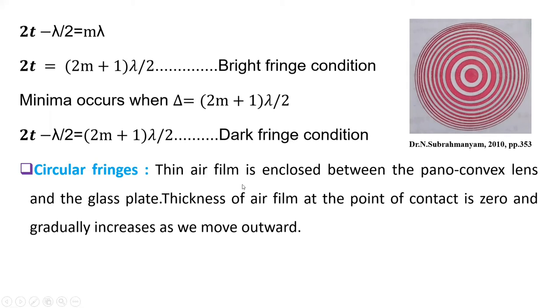And circular fringes. A thin air film is enclosed between that plano-convex lens and the glass plate we have seen. So thickness of the point of contact is 0 and gradually increases as we move outward. When we move outward, thickness of that film increases. We can observe such circular fringes. These are Newton rings.